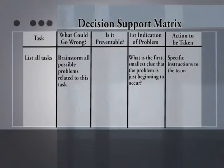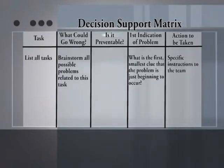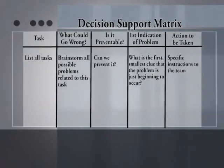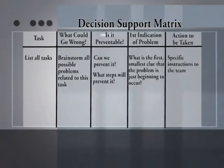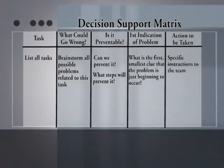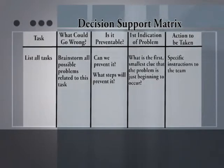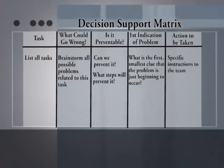First, we go through this exercise to identify all the problems. Then as we do that, we ask: can we prevent this problem? And if we can prevent it, what steps do we need to take? We find these preventive measures, go back into our plan, incorporate them, and now we can cross that problem off the list.